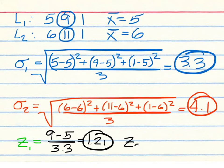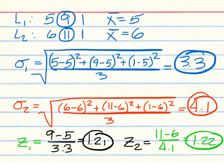Now the z-score for List 2: item 11 minus the mean 6, divided by 4.1. We get 5 divided by 4.1, which is 1.22. The final answer for this one should be List 2, item 11.